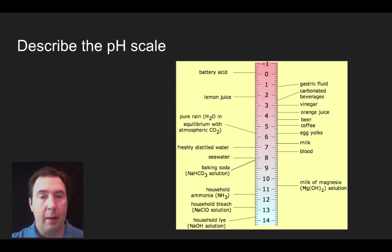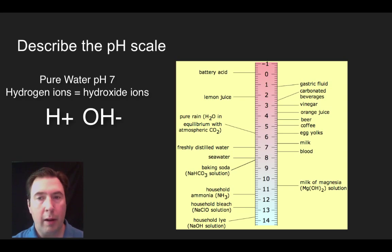All right. So this leads us to another important concept of the discussion of water, and that is the idea of acids and bases. So in pure water, what you have is you have an equal ratio of hydrogens and what we call hydroxides or OH molecules. And so this would be a pH seven freshly distilled water. This is pure water, nothing else in it.